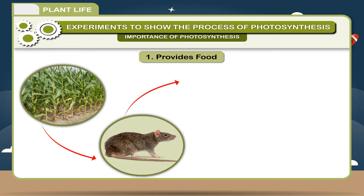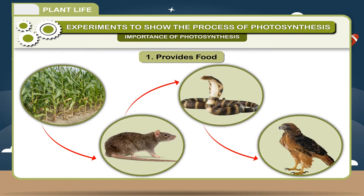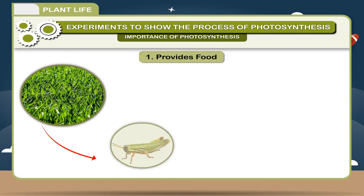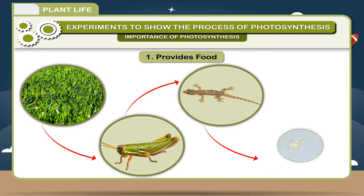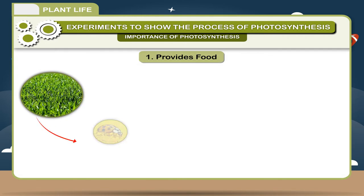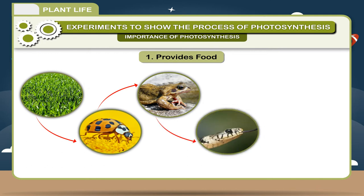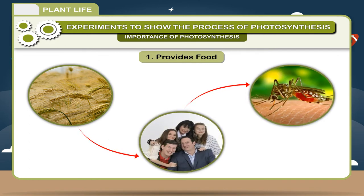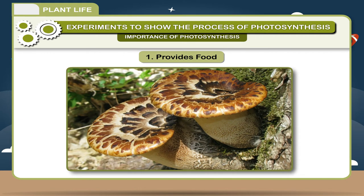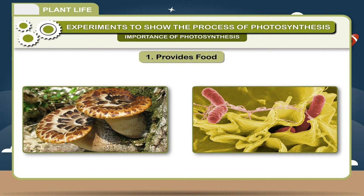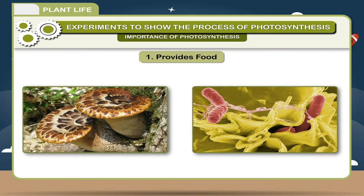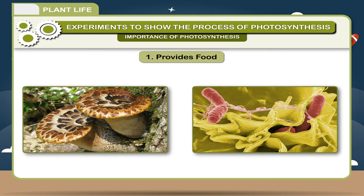Corn to rat to snake to hawk. Grass to rabbit to tiger. Grass to grasshopper to lizard to kite. Grass to insects to frog to snake to peacock. Wheat to man to mosquito. Non-green plants such as fungi and bacteria obtain their nourishment from decaying organic matter in their environment. This matter comes from dead animals and plants which in their own turn were dependent on photosynthesis.